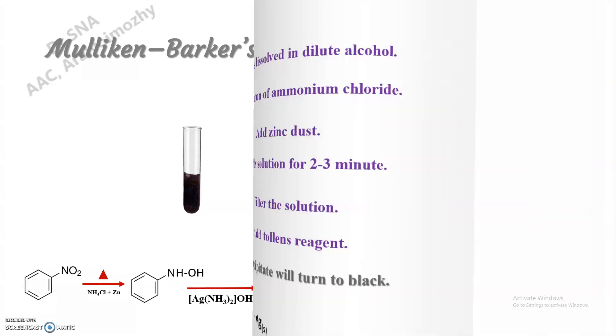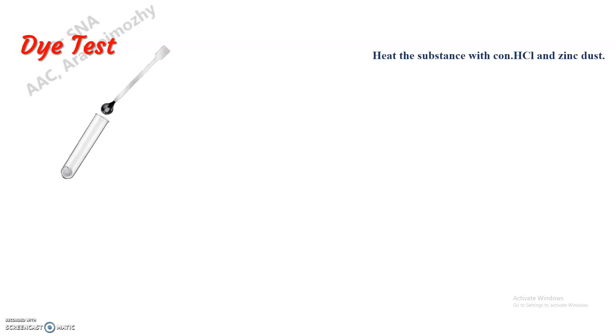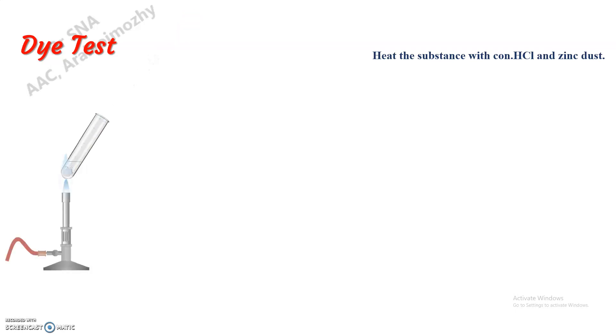The second test is the dye test. First, heat the substance along with concentrated hydrochloric acid and zinc dust. Take the substance in a test tube, add concentrated hydrochloric acid as well as zinc dust, and heat.